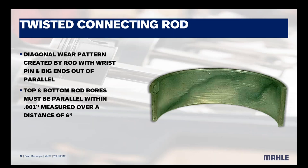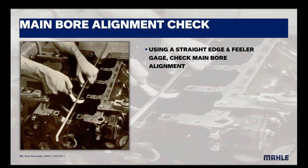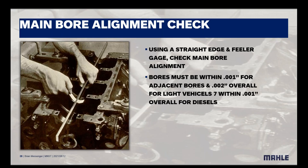A twisted connecting rod — you can see the wear pattern is not straight up and down the bearing but actually at an angle, so the bearing itself is twisting. The main thing is to check whether the crank and all components are straight. We like to see a thousandth measured over a distance of six inches. Using a straight edge and feeler gauge, check main bore alignment — we'd like bores within a thousandth for all adjacent bores, two thousandths overall, and a thousandth overall for diesels, which have significantly higher cylinder pressure.